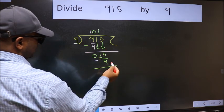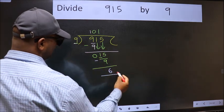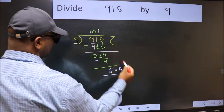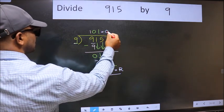No more numbers to bring it down. So we stop here. This is our remainder and this is our quotient.